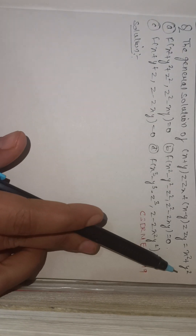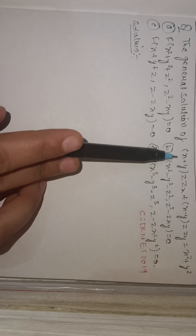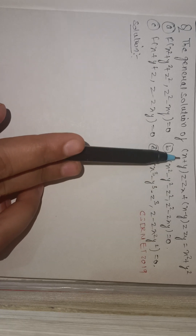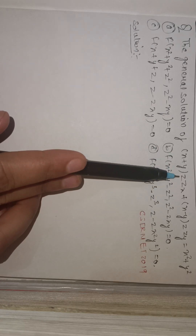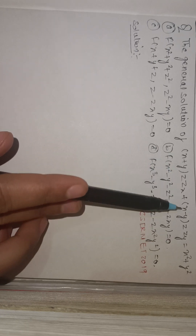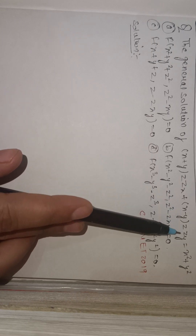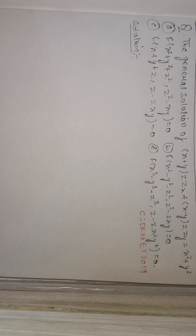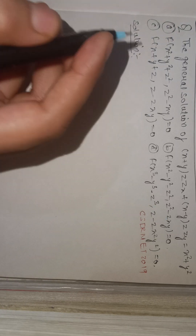Our question is: find the general solution of the partial differential equation (x + y)·z_x + (x - y)·z_y = x² + y².